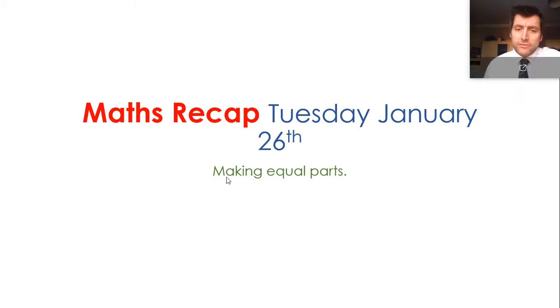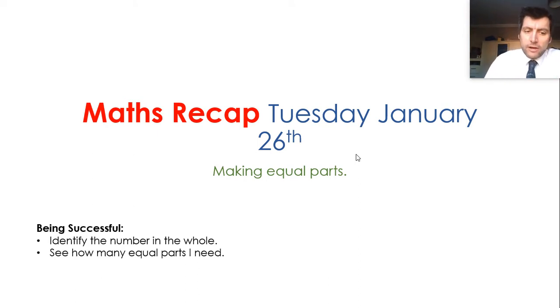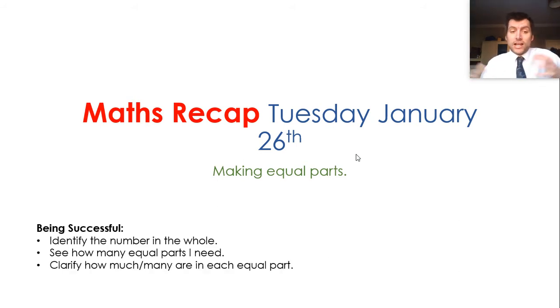So you don't need to send these bits in. So looking at this math recap, if you do want to send it in, I'd love to see it as well. So being successful today, we're looking at making equal parts. We'll identify the number in our whole that we're looking at. Once we've done that, we'll see how many equal parts we're being asked to identify. And then we'll clarify how many or how much is in each equal part.